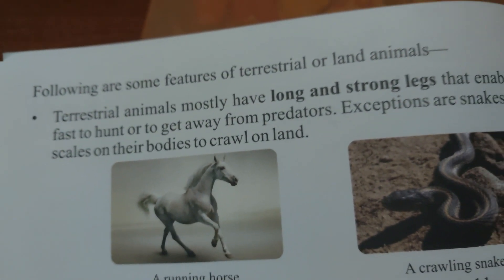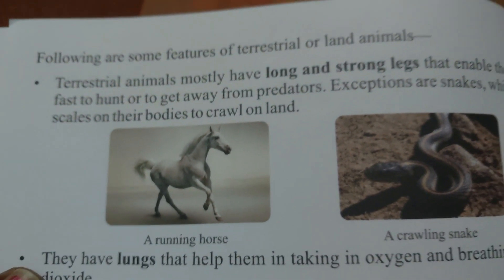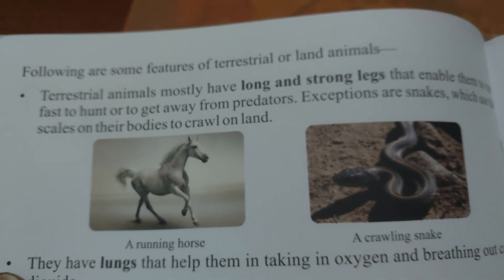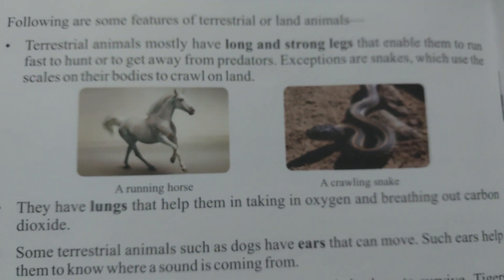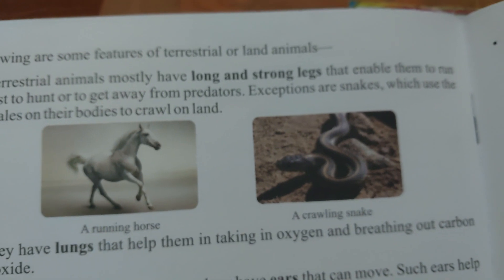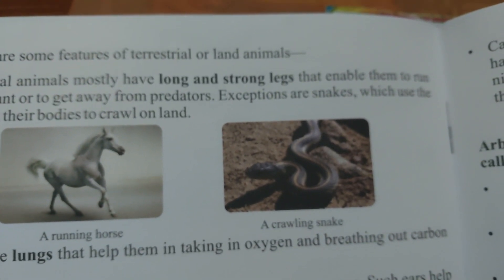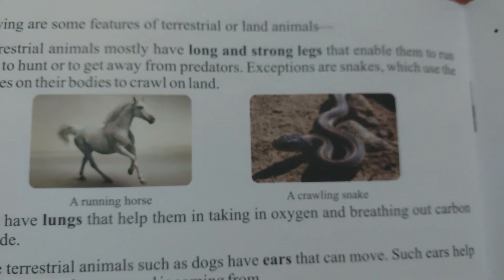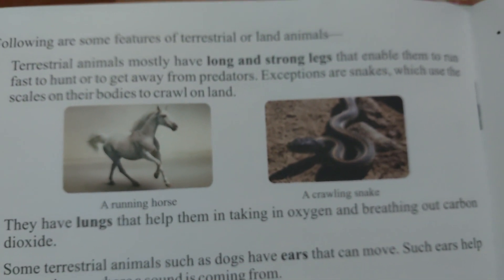Following are some features of terrestrial land animals. Terrestrial animals mostly have long and strong legs that enable them to run fast to hunt or to get away from predators. Exceptions are snakes, which use the scales on their bodies to crawl on land.